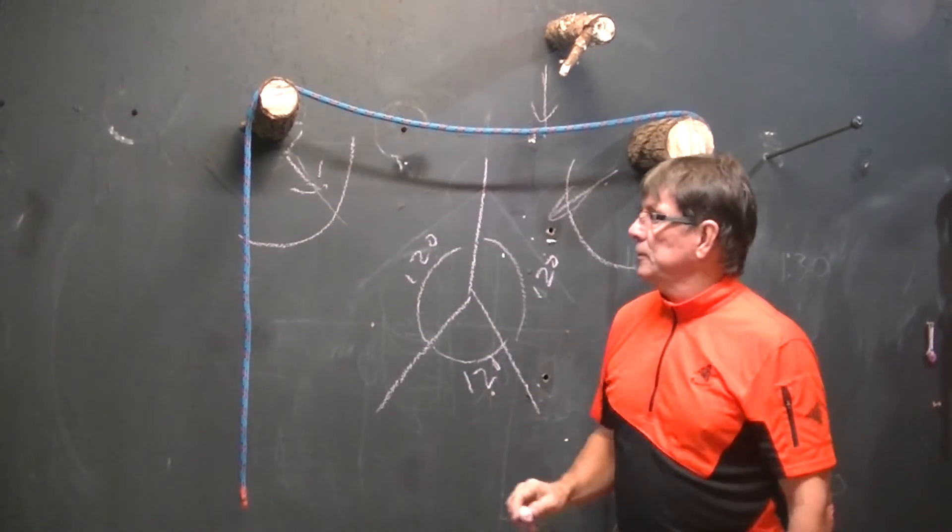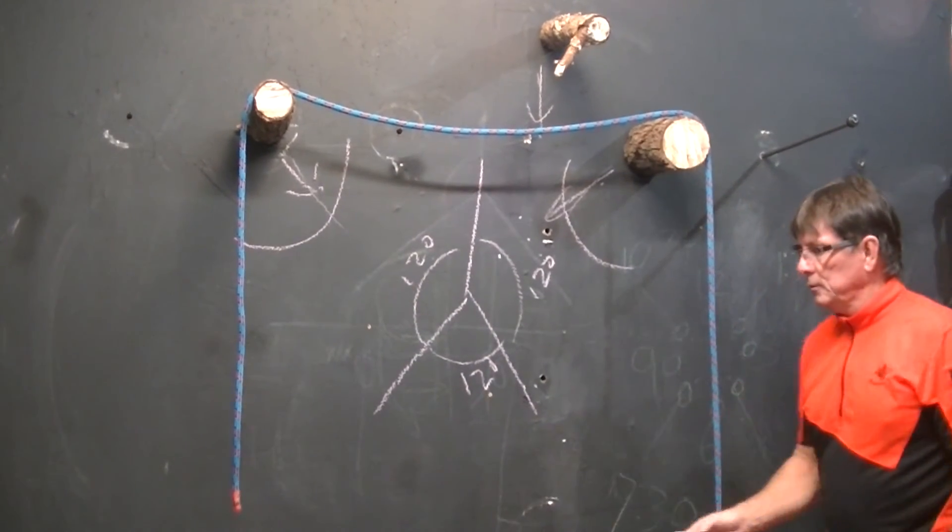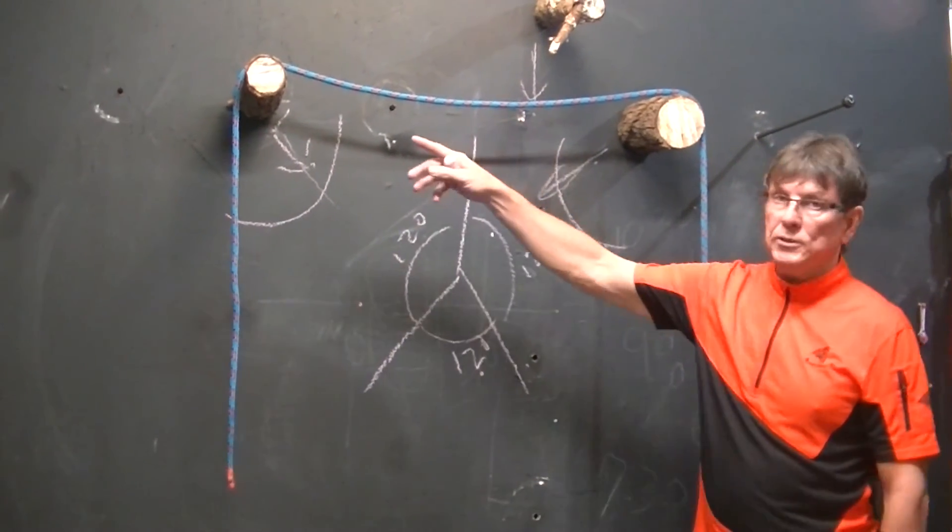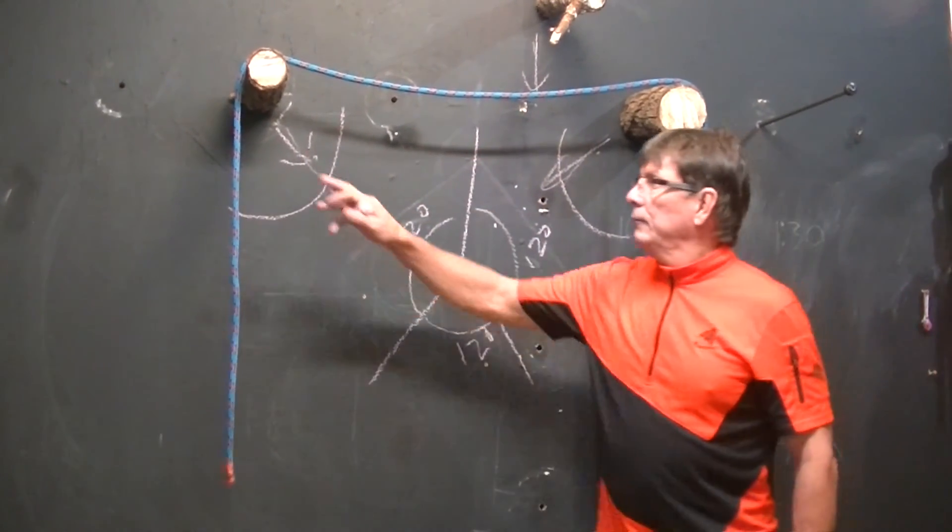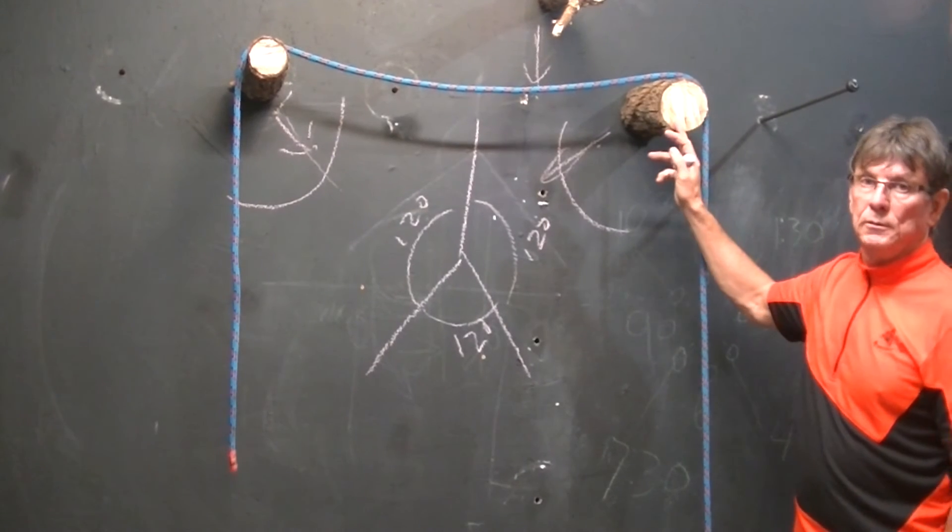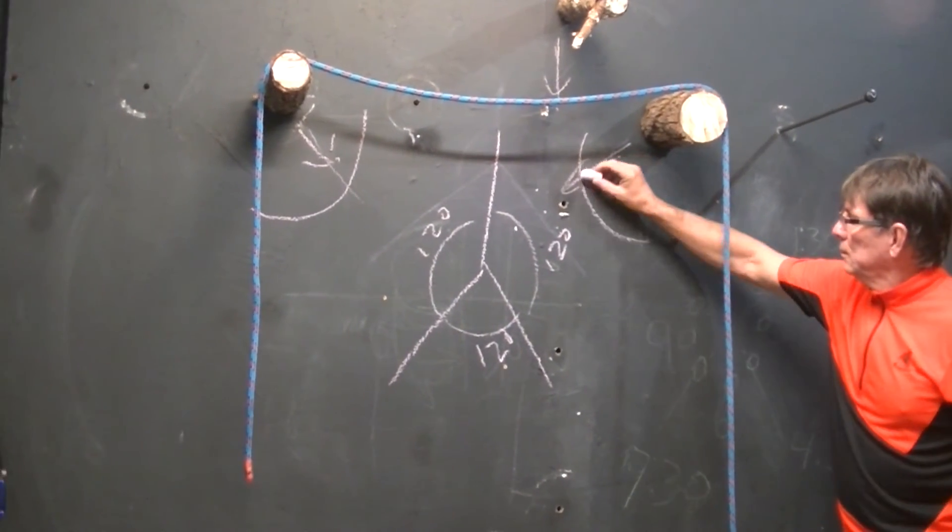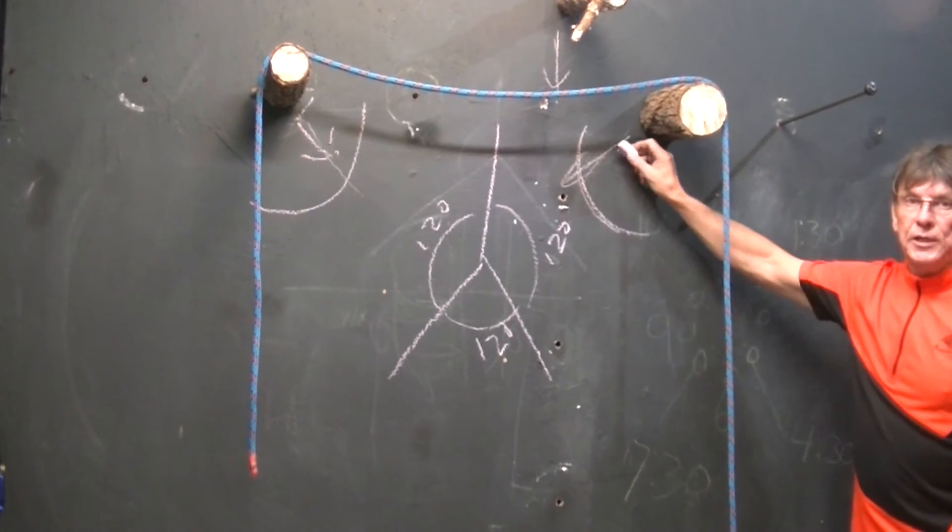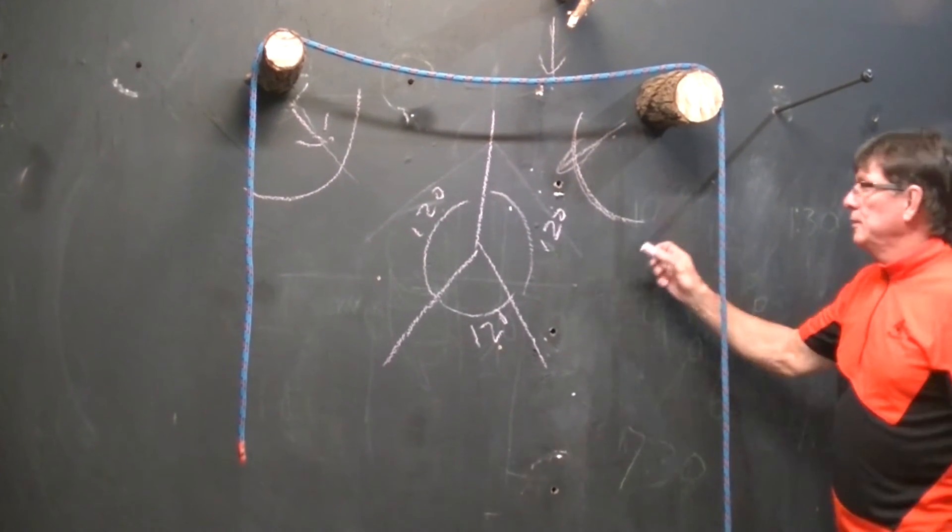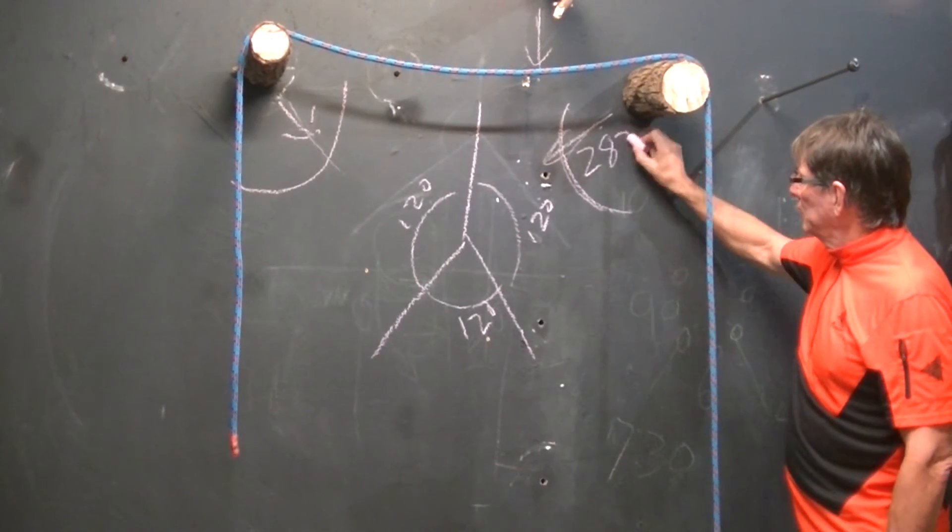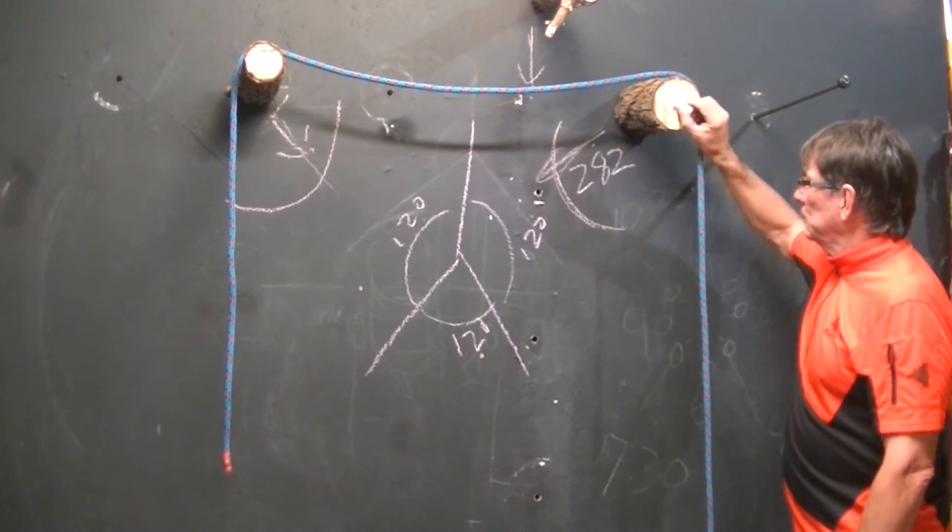That 90 degrees, again, you're probably thinking, okay, rather than having a 400 pound load, I'll split it two ways. So, I would have 200 pounds on each one of these anchors. And in reality, what you have is 141% because of those angles. So, I have 282 pounds on each one of these.